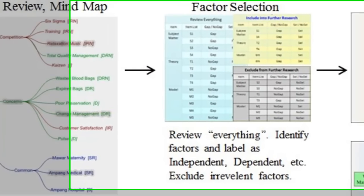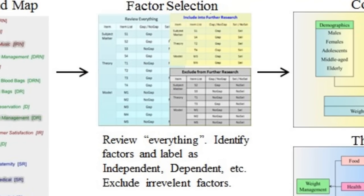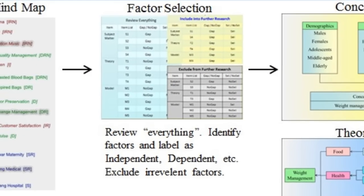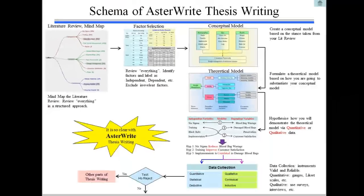Factor Selection. Only selected variables make it to the factor selection. These are arranged according to subject matter, theory and model.